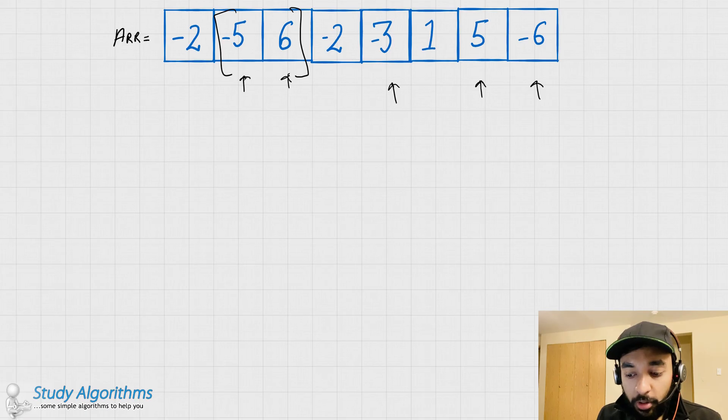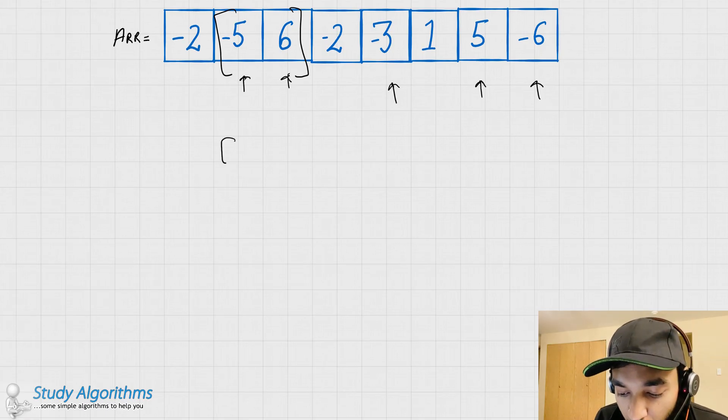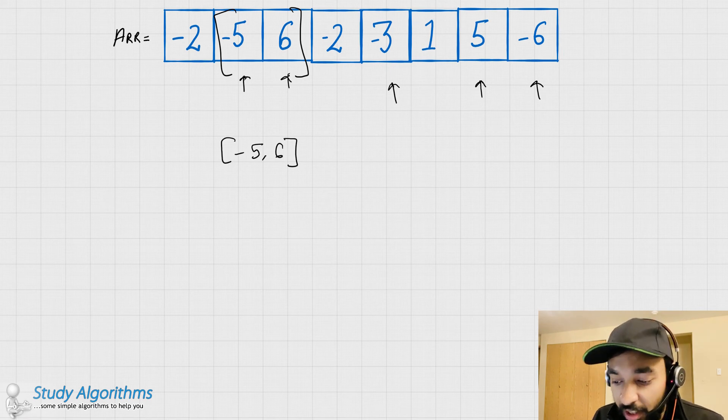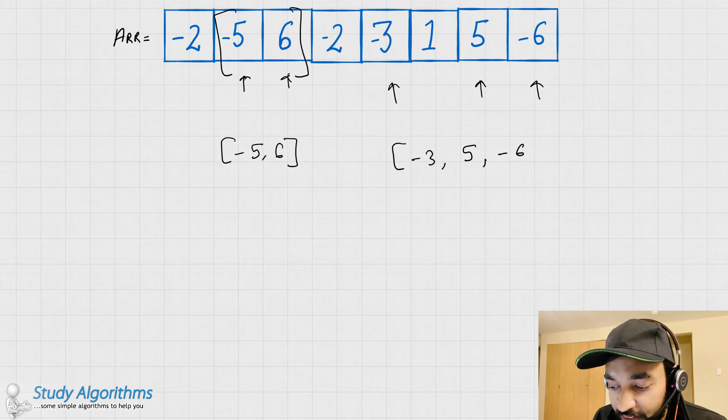But, this problem talks about a contiguous subarray. With a contiguous subarray, its special property is that all the elements are next to each other. So, minus 5, 6 would be considered as a contiguous subarray, whereas, minus 3, 5, minus 6 is not a contiguous subarray.